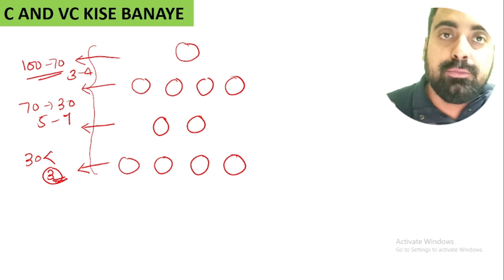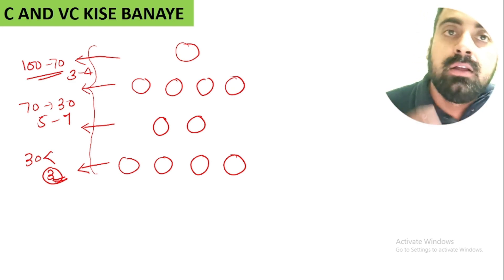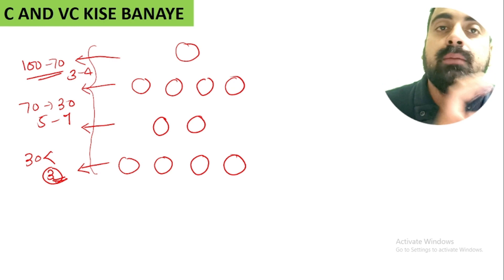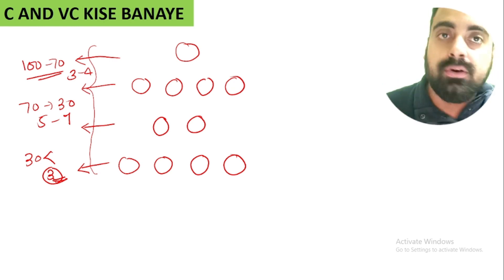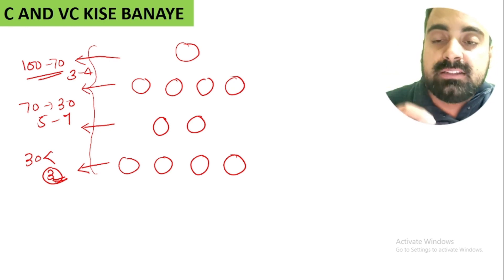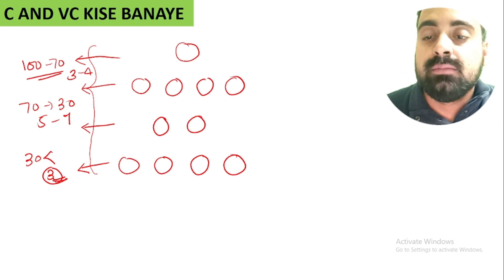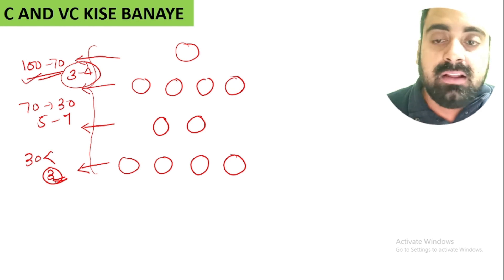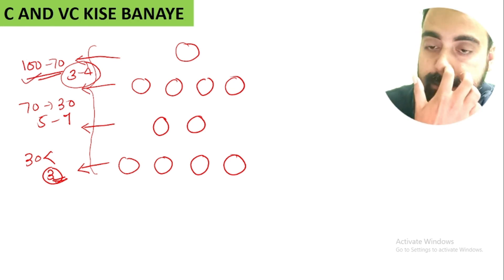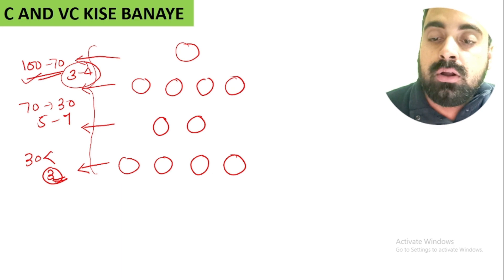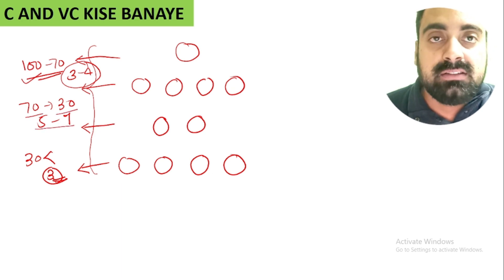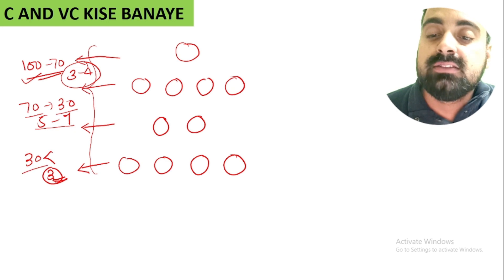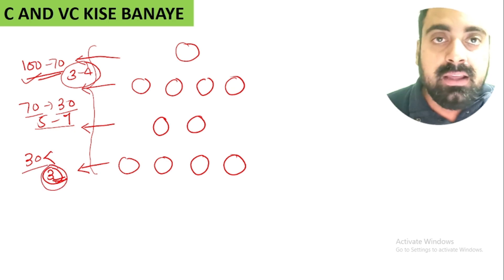In the next video, we will talk about the pool method. But at this point, understand that you have made your team with 3 to 4 players from 100–70% selection, 5 to 7 players from 70–30% selection, and 3 players from less than 30% selection.